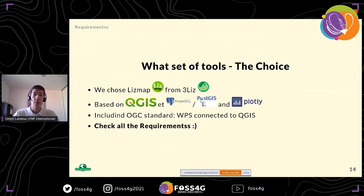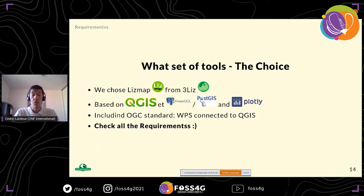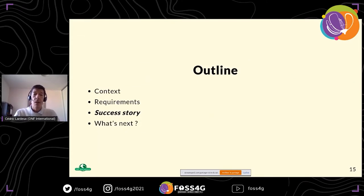What we chose is LizMap — a plugin approach developed by 3Liz, based on QGIS, PostgreSQL, and PostGIS for the database. We can also use Plotly. We chose it because it is quite simple to use, very flexible — you can adjust the interface, add buttons, or add new functionality with JavaScript. It's connected to OGC standards, especially WPS, which makes it a good fit for us.